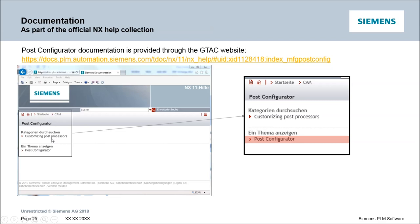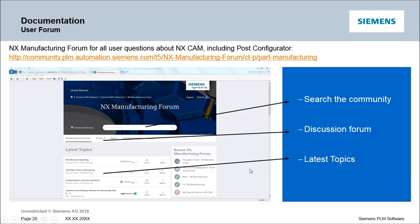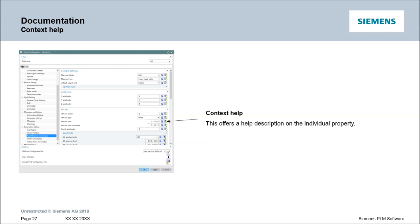For example, under 'Customizing Post Processors' you have different topics available. If you have questions not answered in the help, I recommend using the NX Manufacturing Forum — just post your question and you will get an answer from the community. Also, sometimes small things are directly in the context help of PostConfigurator itself — just read the property descriptions and maybe your problem is already solved. Okay, thanks for your attention. Goodbye.